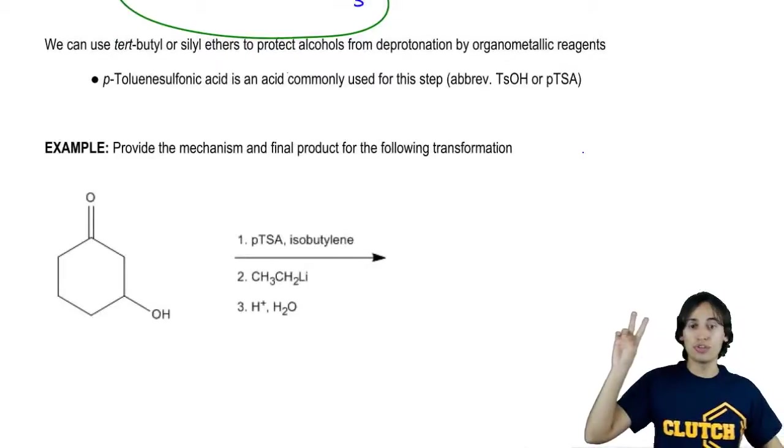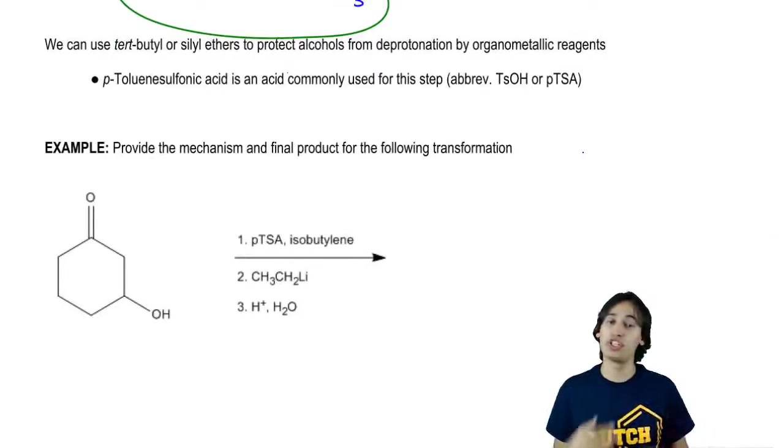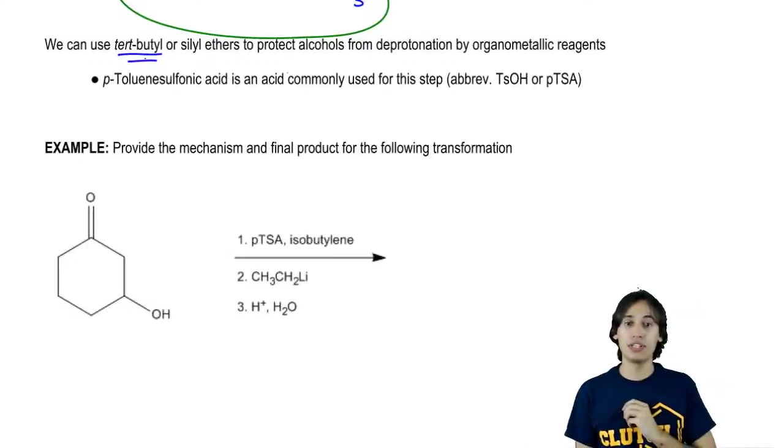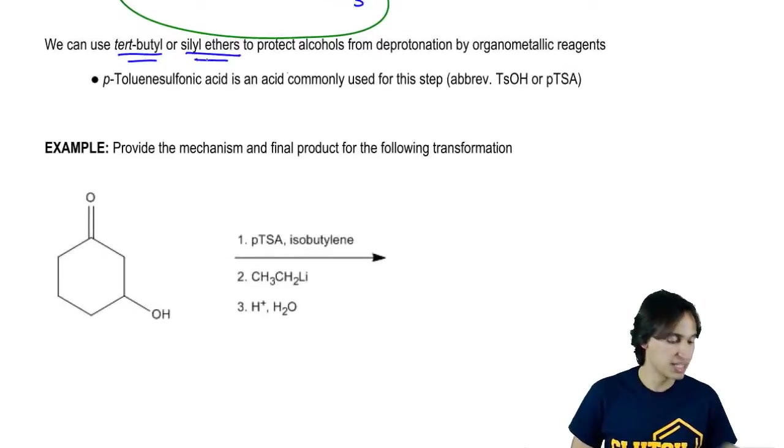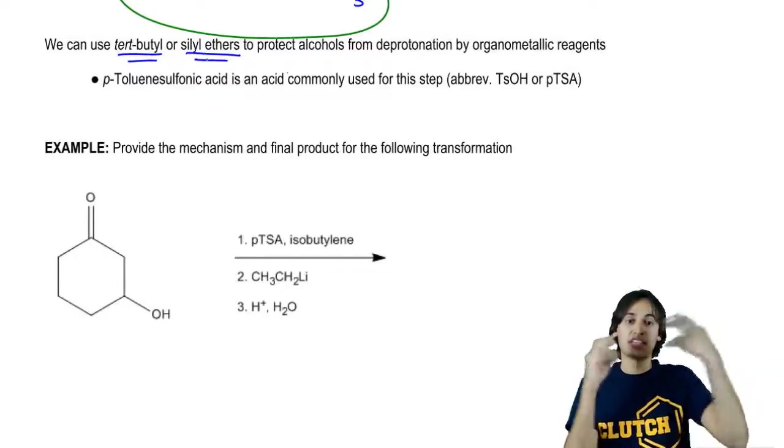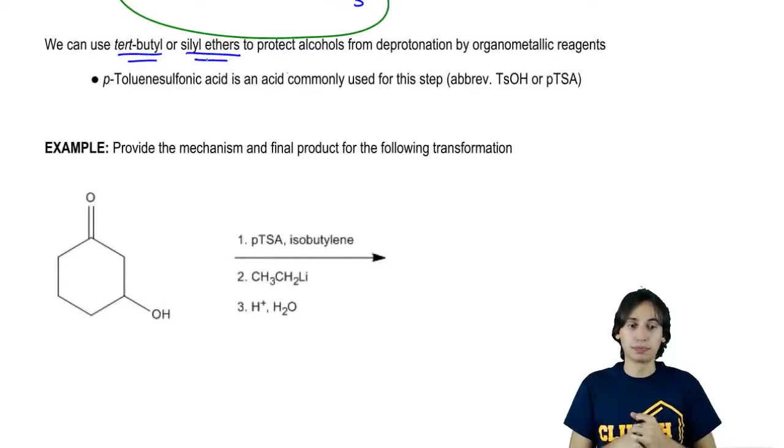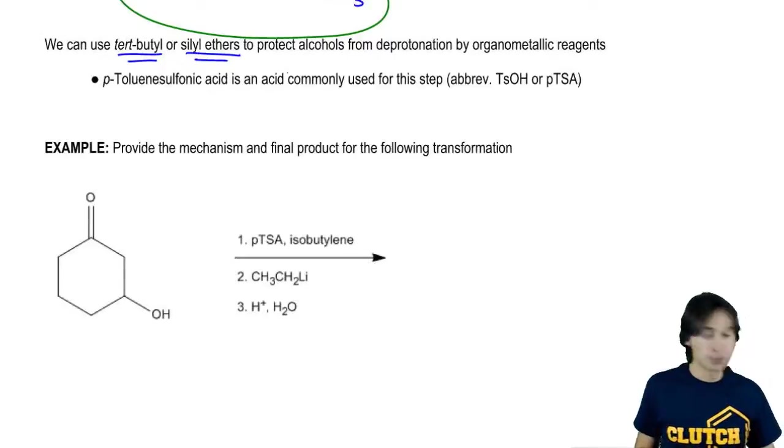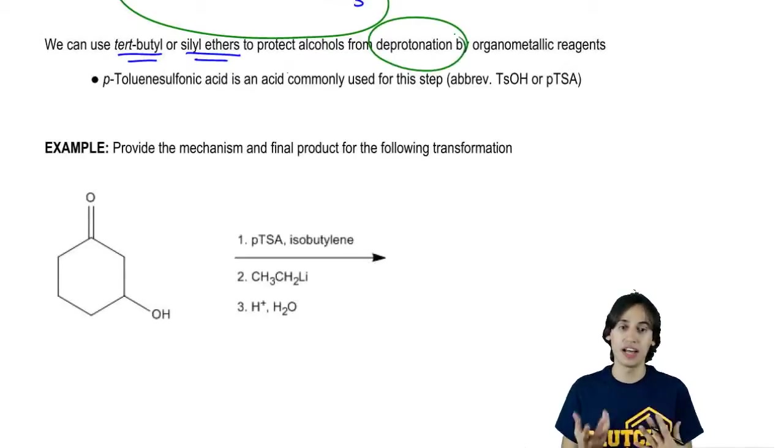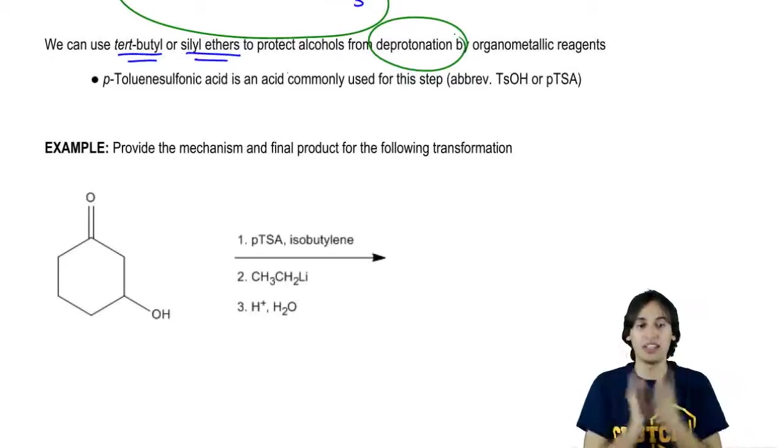Basically there are two different types of reagents that we can use to protect alcohols. We can use tert-butyl ethers or silyl ethers. Both are ways to protect an alcohol from reaction. When you protect it, it's not going to be deprotonated by the organometallic. Instead it's going to be locked up in that ether.